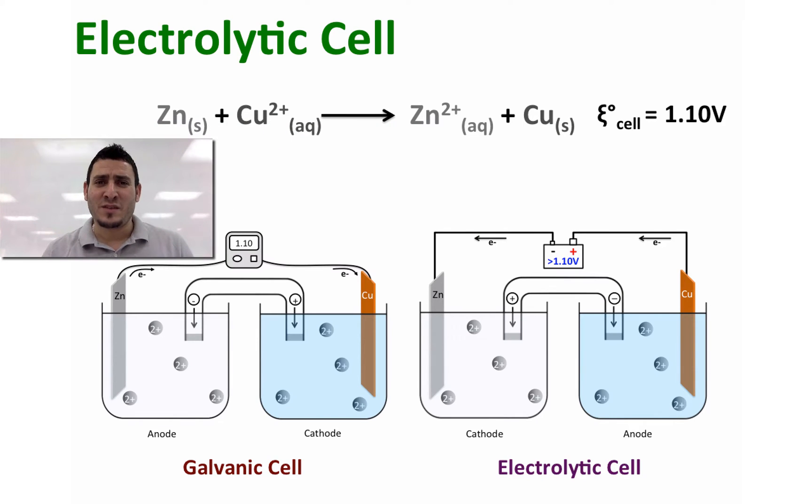A galvanic cell produces current when an oxidation-reduction reaction proceeds spontaneously. A similar apparatus, called an electrolytic cell, uses electrical energy to produce chemical change. The process of electrolysis involves forcing electrons into a cell to produce a chemical change for which the cell potential is negative, causing a non-spontaneous reaction to occur.